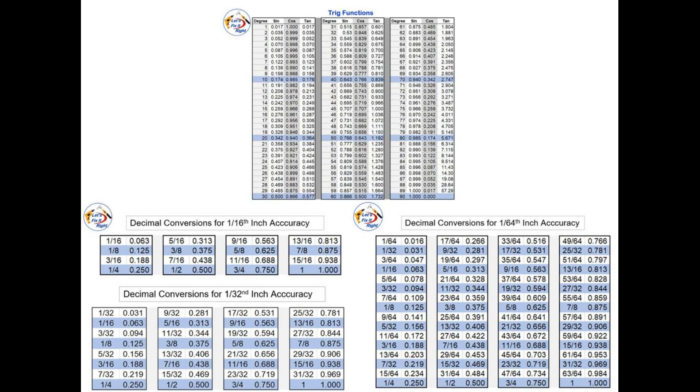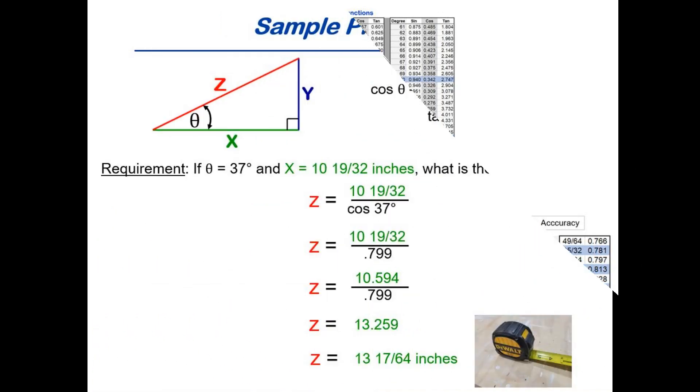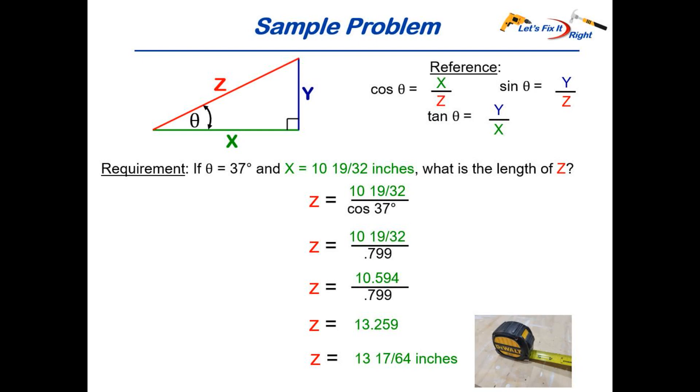If you want a pdf copy of my let's fix it right trig table and decimal conversion tables which I designed and built using excel spreadsheets go to the description below select show more and use my email address to request your copy. In most cases I'll respond by emailing you this material in less than 24 hours. With this sample problem complete we are now ready to determine our baluster spacing on our knee wall.